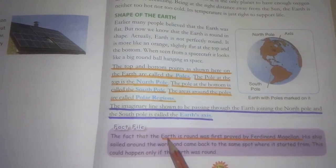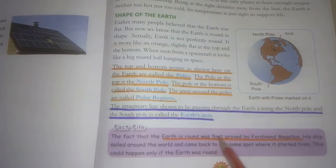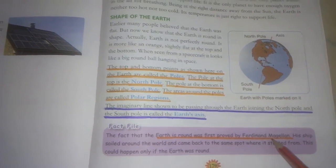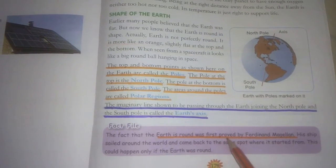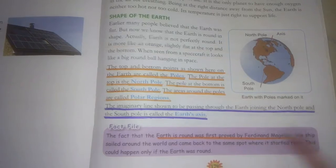Fact file: you need to remember that earth is round was firstly proved by Ferdinand Magellan. The round shape of earth was first proven by Ferdinand Magellan.